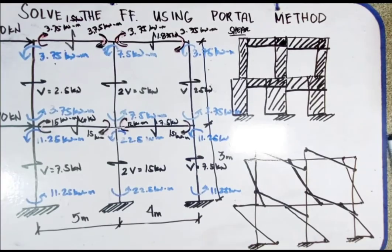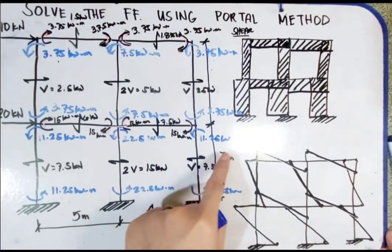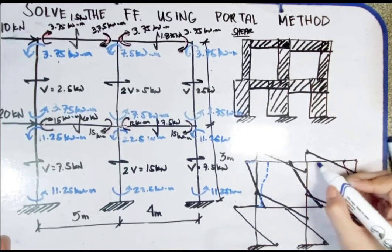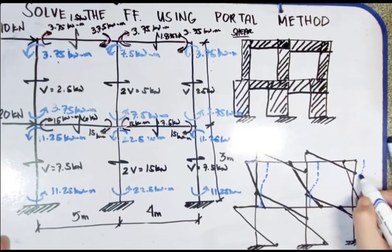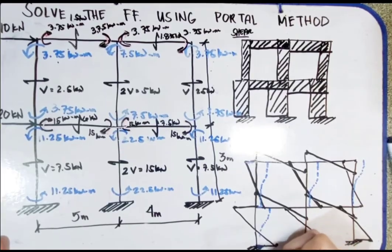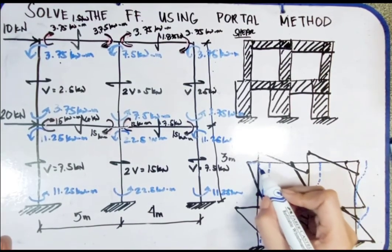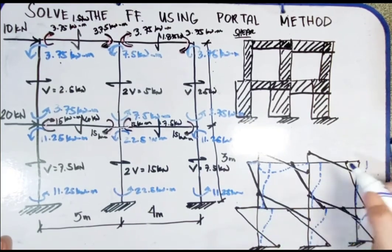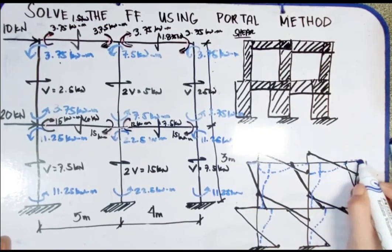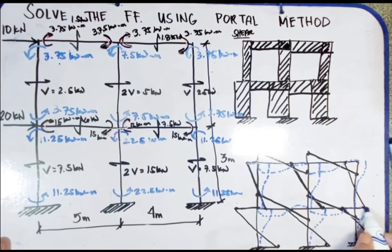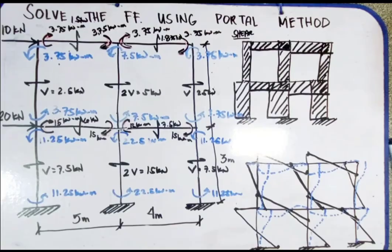To determine the sway, we base it on the moment diagram. Reading the deflected shape from the moment values, we can sketch the sway diagram showing the lateral displacement of each story. That concludes the portal method example — including the shear diagram, moment diagram, and sway diagram. Thank you.